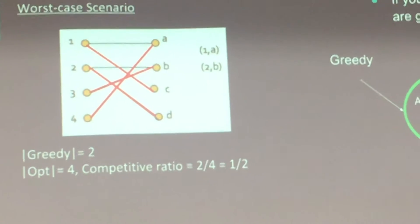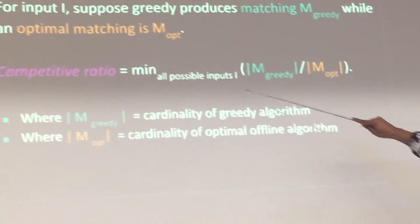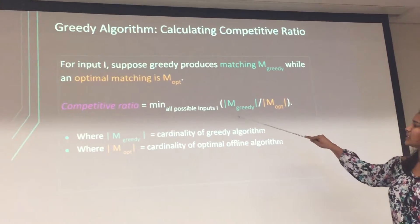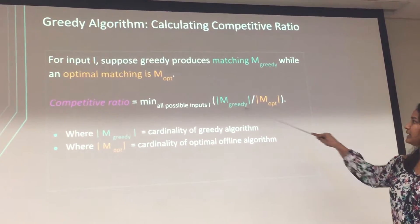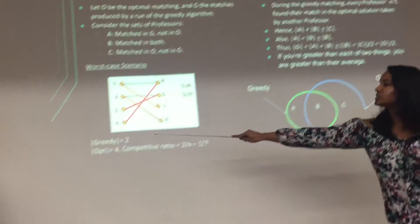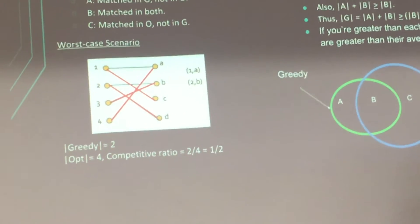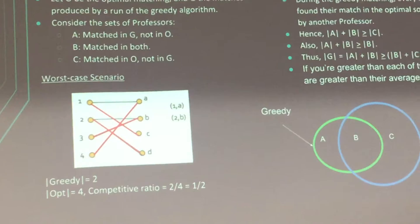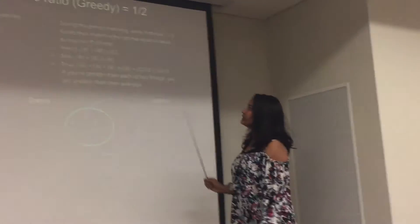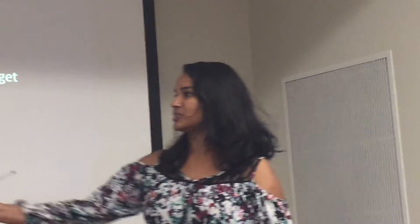From the slide we saw, the competitive ratio is the cardinality of greedy divided by the cardinality of optimal, which is two divided by four, giving one-half. There's also another algorithm for solving adwords that will be explained next.